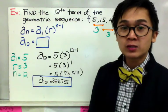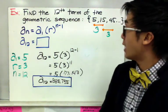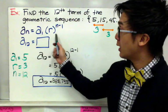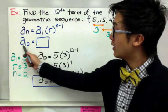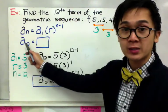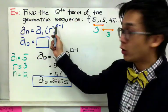Now to find the 12th term of a geometric sequence given 5, 15, and 45, we're going to use the formula which is a sub n equals a sub 1 times r to the n minus 1, and find the 12th term of the sequence by plugging in the value of a sub 1, r, and n in our formula.